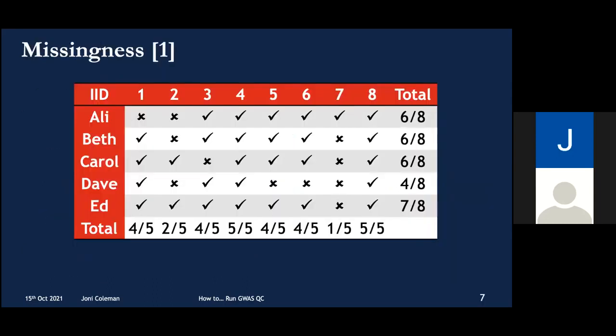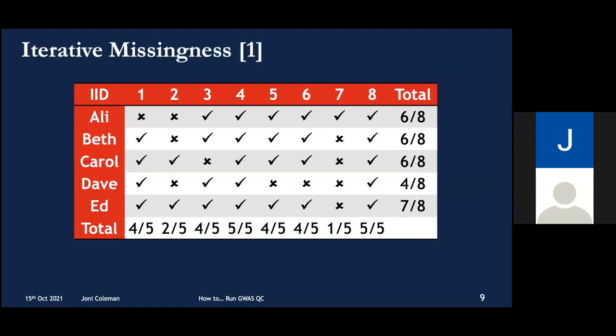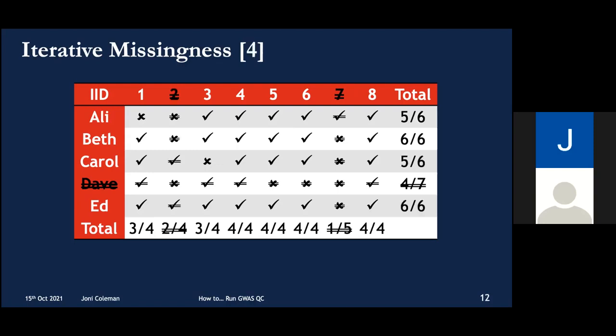Missingness is best dealt with iteratively. To convince you of that, let's examine this example data. We want to keep only the participants — the rows in this example — with complete or near complete data on the eight variants we're examining, shown in the columns. So we could remove everyone with fewer than seven SNPs, but when we do that, we've obliterated our sample size. So instead, let's do things iteratively: we remove the worst SNP — variant seven goes — then we remove the worst participant — bye bye Dave — then we remove the next worst SNP, SNP two. Now everyone has near-complete data and we've retained nearly all of our cohort.